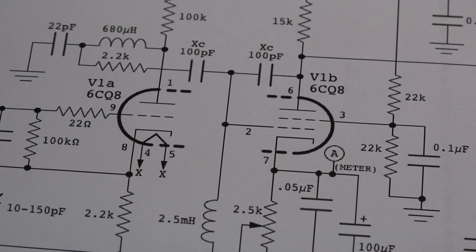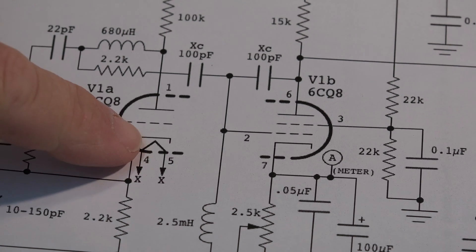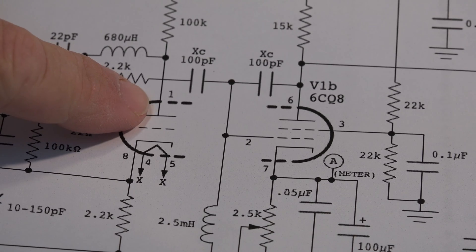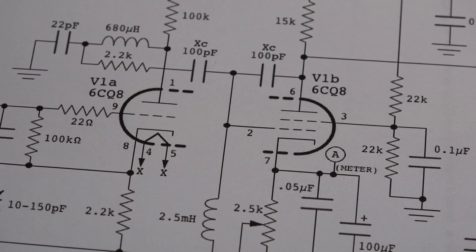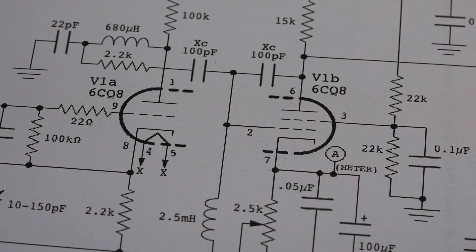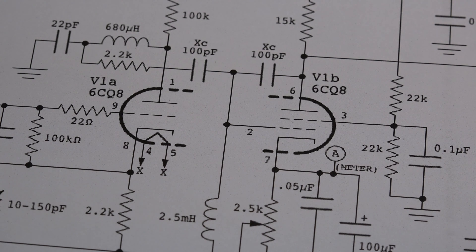There are several different types of vacuum tubes, the simplest being a diode. A diode is simply a cathode and a plate, and it just rectifies AC to DC. The next type of tube is called a triode. A triode is a basic amplifier.